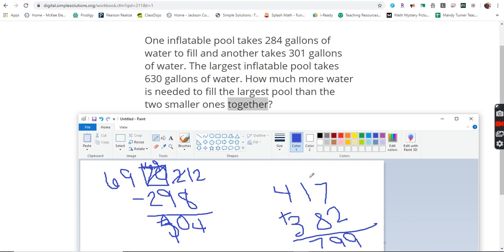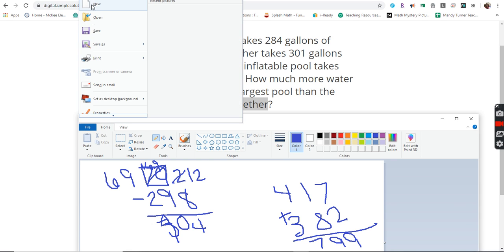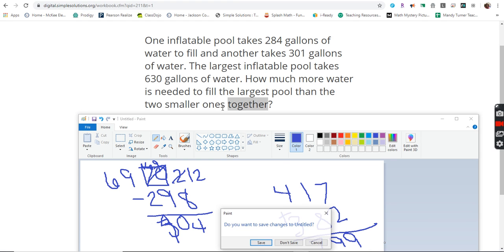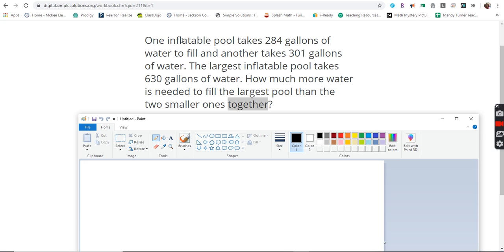How much more is needed to fill the largest pool than the two smaller ones together. Okay. So we're going to pull up, let's go ahead and clear this out. Get a new one. No, I don't need to save. So we have 284 plus 301. 4 plus 1 is 5. 8 plus 0 is 8. 2 plus 3 is 5.